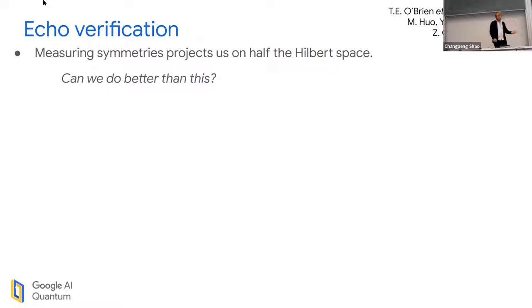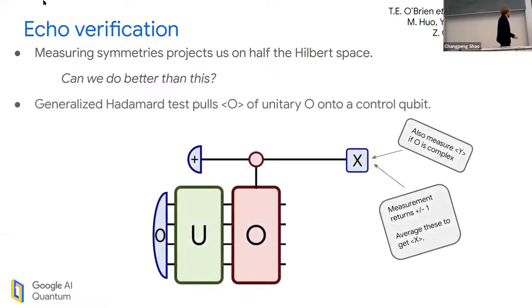Let me move on to echo verification. New name, used to be called verified phase estimation. This is where I always have a hard time explaining it. If I want anyone to get anything out of this talk, it's a better understanding of how this technique works. Let me motivate the technique: we were getting about a factor of 10 reduction from measuring symmetries that projects us onto roughly half of the Hilbert space.